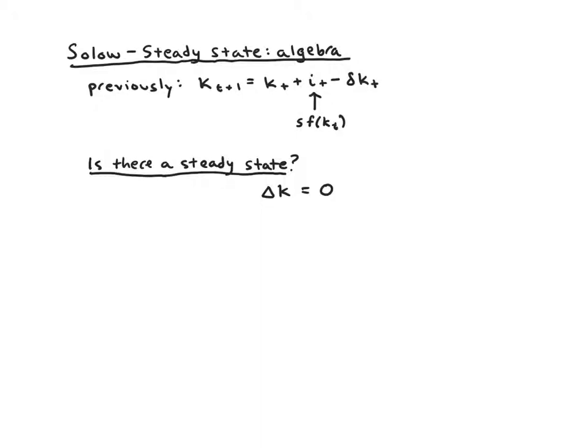Depreciation is basically capital breaking down — things get old, equipment gets old, factories get old and fall apart. For simplicity, in the basic model, our investment is a fraction s of our output, so s times f(k_t), and that savings is used for investment in this closed economy. Our depreciation is a fixed fraction delta of our capital, so delta times k_t.